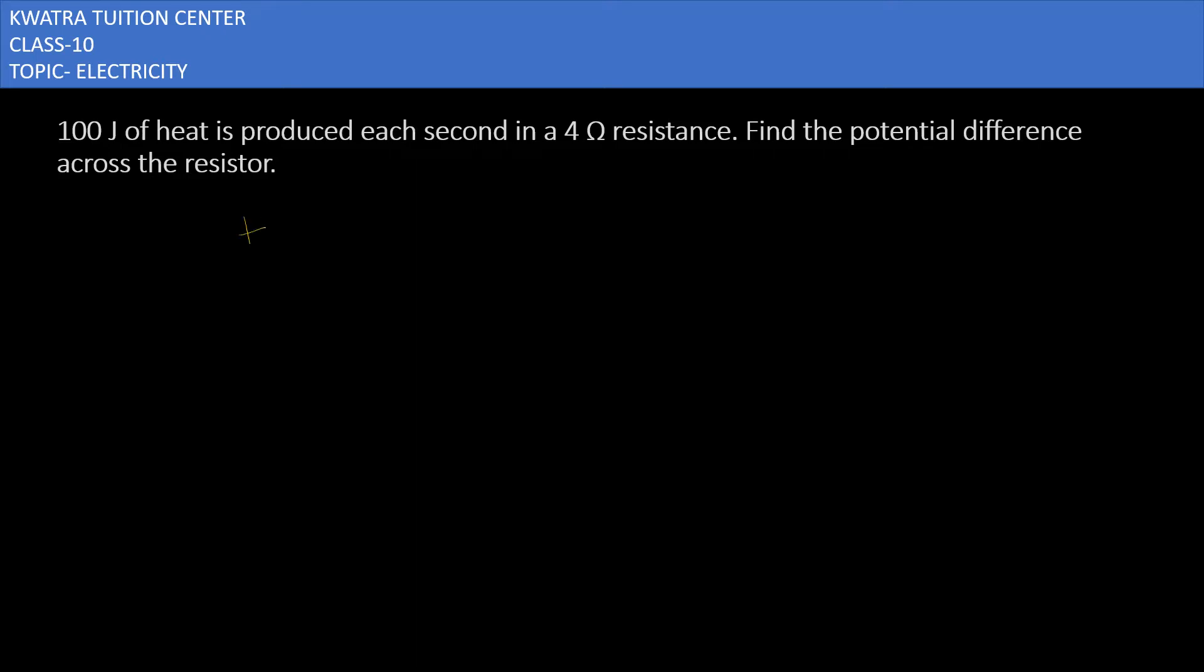So what we have to note here. Heat is 100 joule. Time is 1 second. Resistance is 4 ohm. And what do we have to find? We need the potential difference.